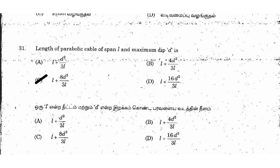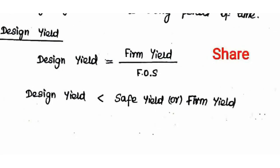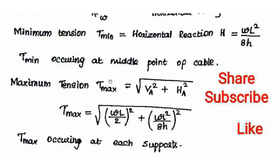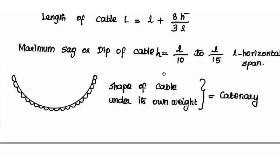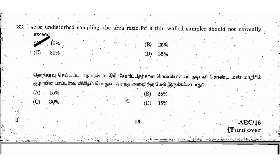The length of a parabolic cable of span L and maximum dip D is: L plus 8D² divided by 3L — right answer option C. This formula, L = L + 8H²/3L, is the same as discussed earlier. This concludes the cable questions; more in the next video. Thank you.